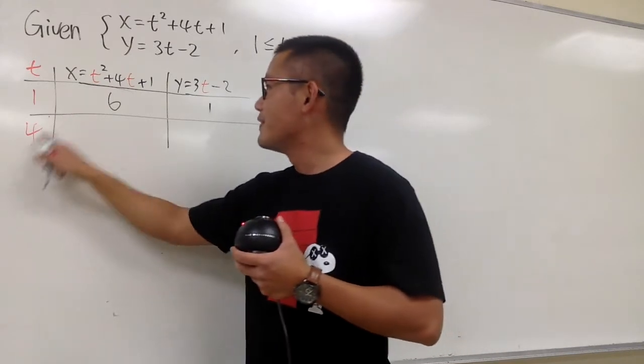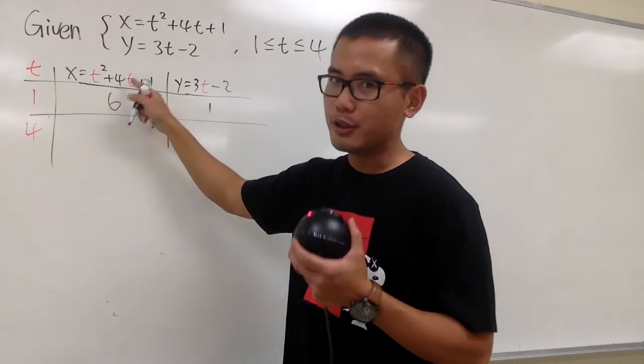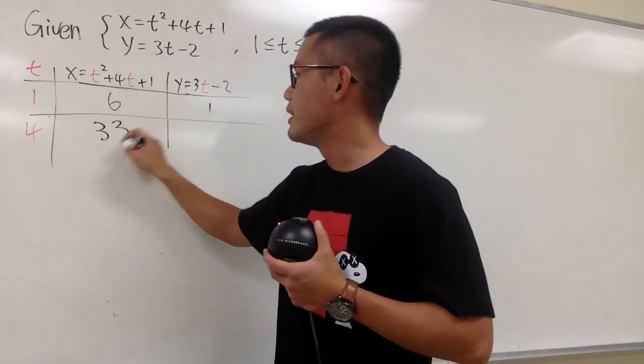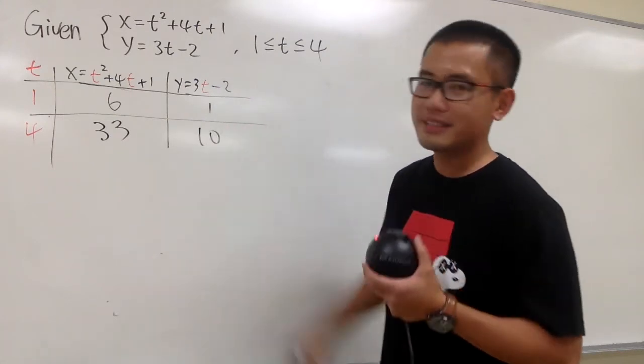And then plug in 4 right here, 4 squared is 16, plus 4 times 4, which is another 16. 16 plus 16 is 32, plus 1 is 33. 4 plug in here, 3 times 4 is 12, 12 minus 2 is 10. So just like this.